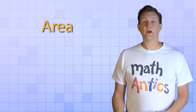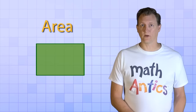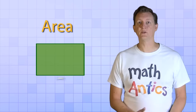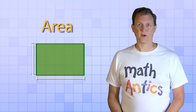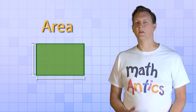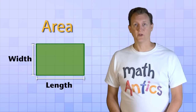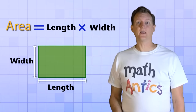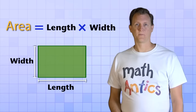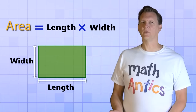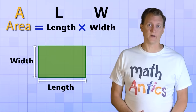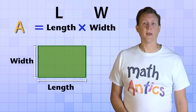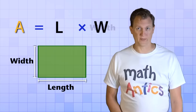To find the area of any square or rectangle, all we have to do is multiply its two side dimensions together — they're usually called the length and the width. So the formula looks like this: Area equals length times width. It's often written with just the first letters of each word as abbreviations: A for area, L for length, and W for width.